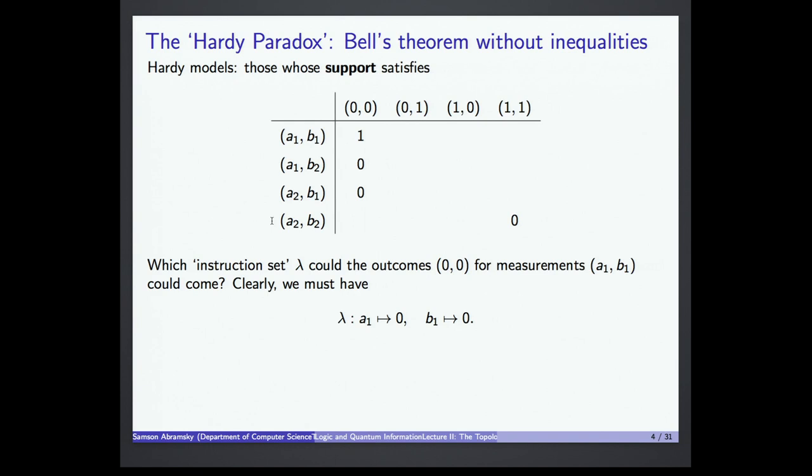Now let's say there was a classical source — a probability distribution over instruction sets which generated a table like this. Since this thing is possible, there must be some instruction set in the support of that classical source distribution which has positive probability. There must be some lambda which is possible according to the classical source. So what could this lambda be? We know what it has to assign to these two variables: it has to assign zero to both of them because this thing is in the support. The point about non-contextuality is that everything has a well-defined value whether we're measuring it or not.